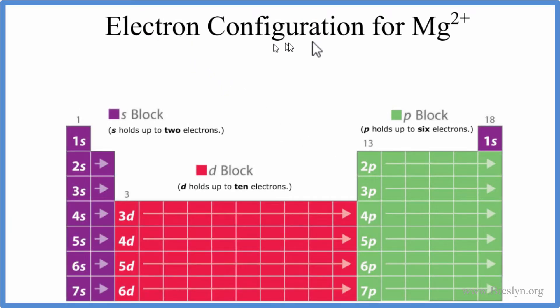In this video, we'll write the electron configuration for Mg2+, that's the magnesium ion. So first, before we do Mg2+, we should probably do Mg. That's how we find magnesium on the periodic table. This is a neutral element. It doesn't have a plus or minus charge.